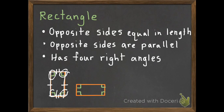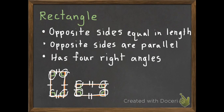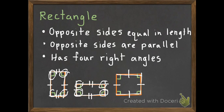Here's another example of a rectangle. The opposite sides are equal in length — the left and the right side are equal, the top and the bottom are equal. The opposite sides are parallel — top and bottom are parallel, left and right are parallel — and it has four right angles. This can also be a rectangle: opposite sides are equal, opposite sides are parallel, and four right angles. So those are rectangles.